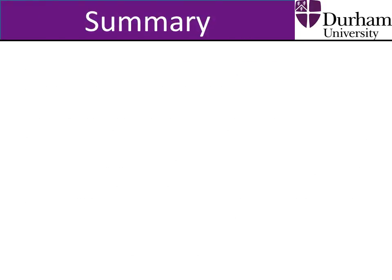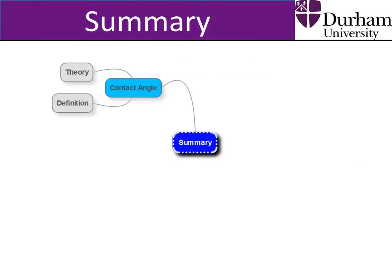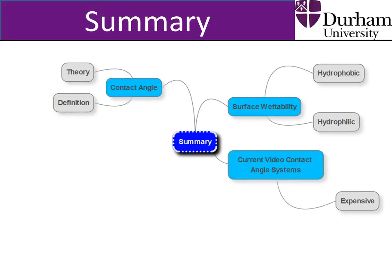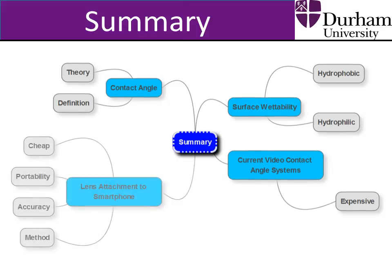In this video we have looked at the theory and definition of droplet contact angles, as well as how contact angle is used to characterise the wettability of a surface. We have also looked into how contact angle is currently measured using video contact angle systems. We have then explored, in detail, an alternative system of contact angle measurement using a smartphone and a lens attachment that is compact, portable, and at least 10 times cheaper than currently used video contact angle systems.